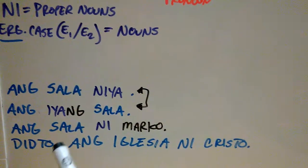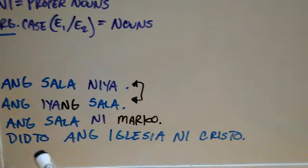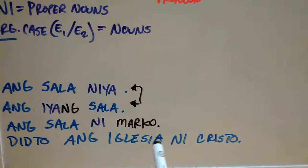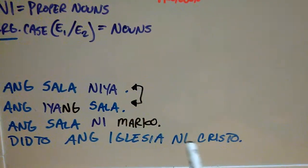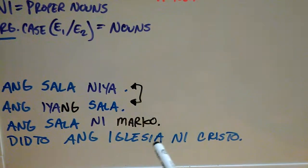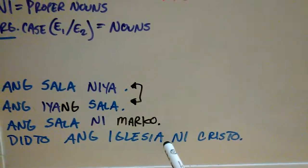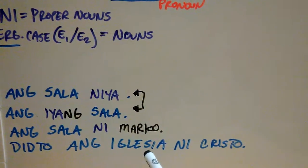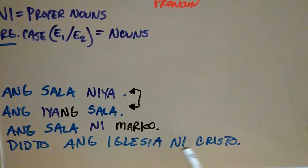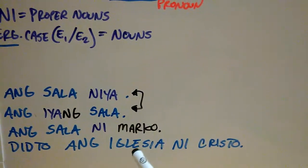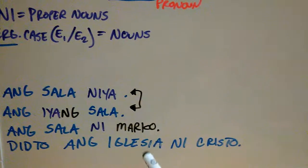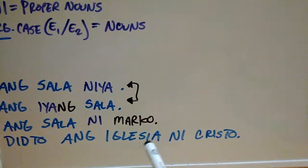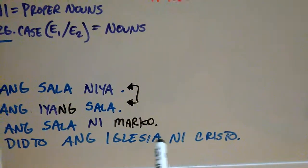The last example is: dito ang iglesia ni Cristo — over there is the Church of Christ. Again, ni marks Cristo, which is Christ. So this is the Church of Christ — it's showing ownership. We're still in the OG set of markers. Since iglesia is our noun meaning church, Christ owns the church — it's Christ's church. Dito, meaning way yonder over there — dito ang iglesia ni Cristo — way yonder over there is the Church of Christ.